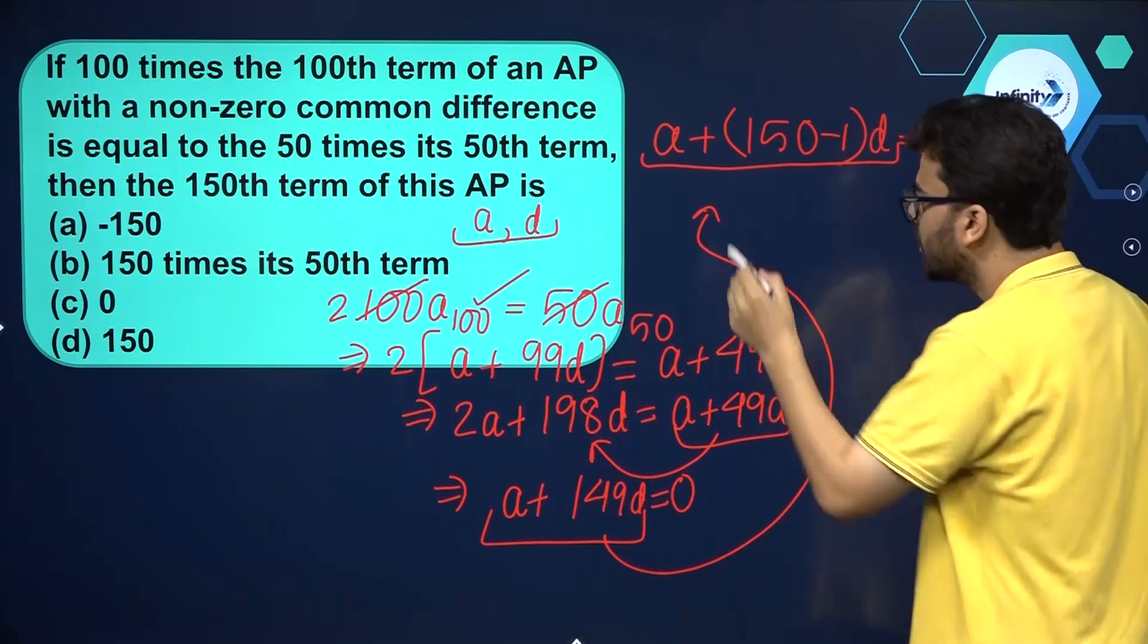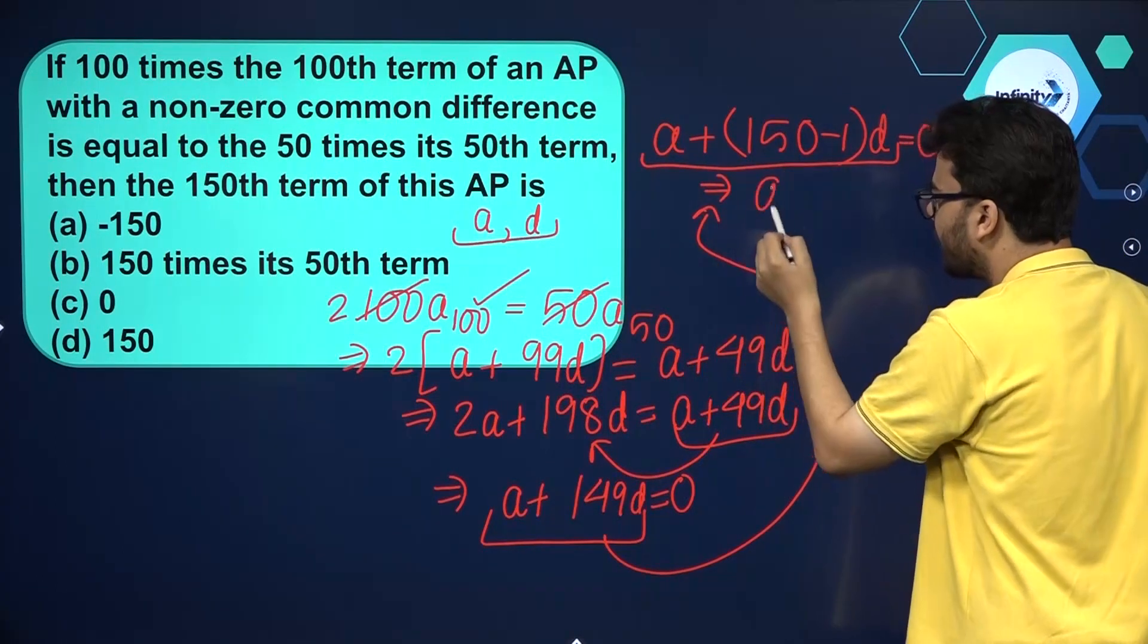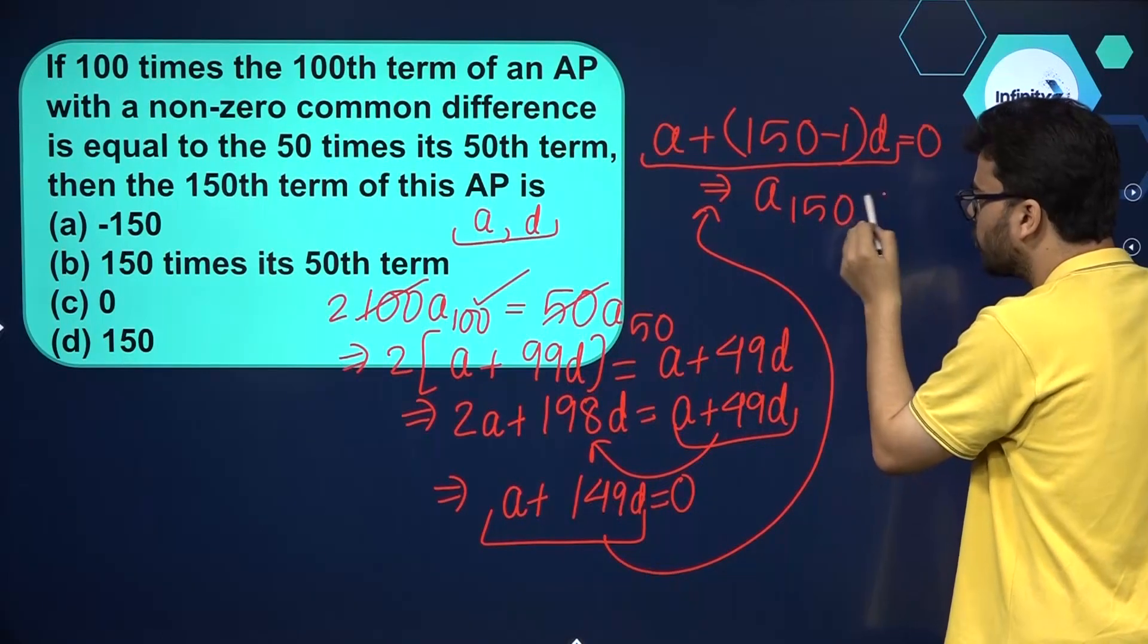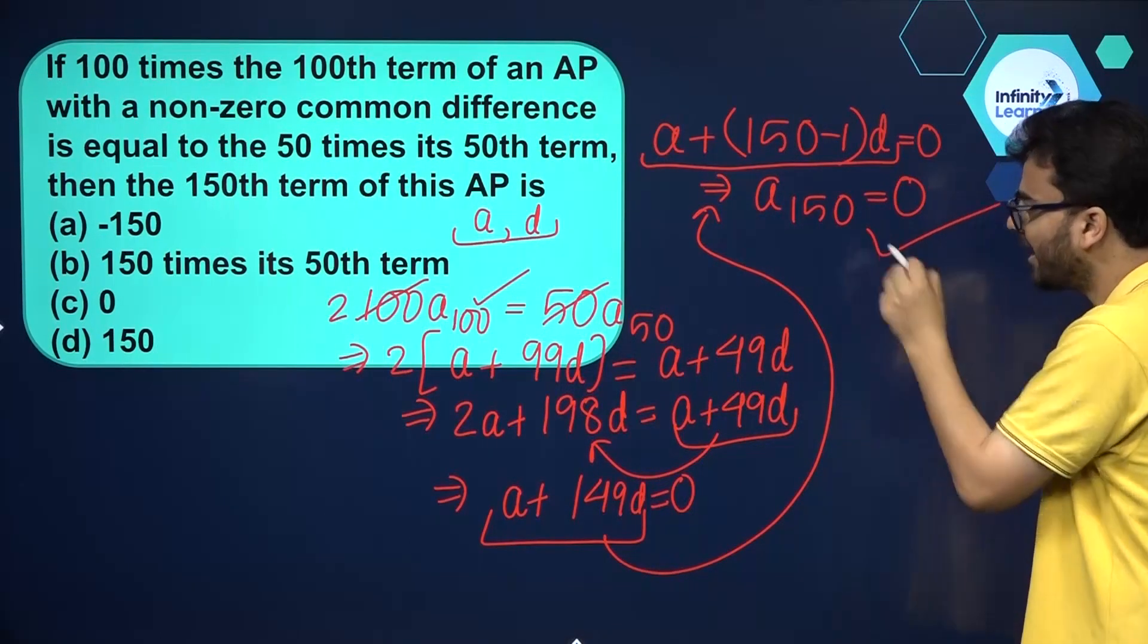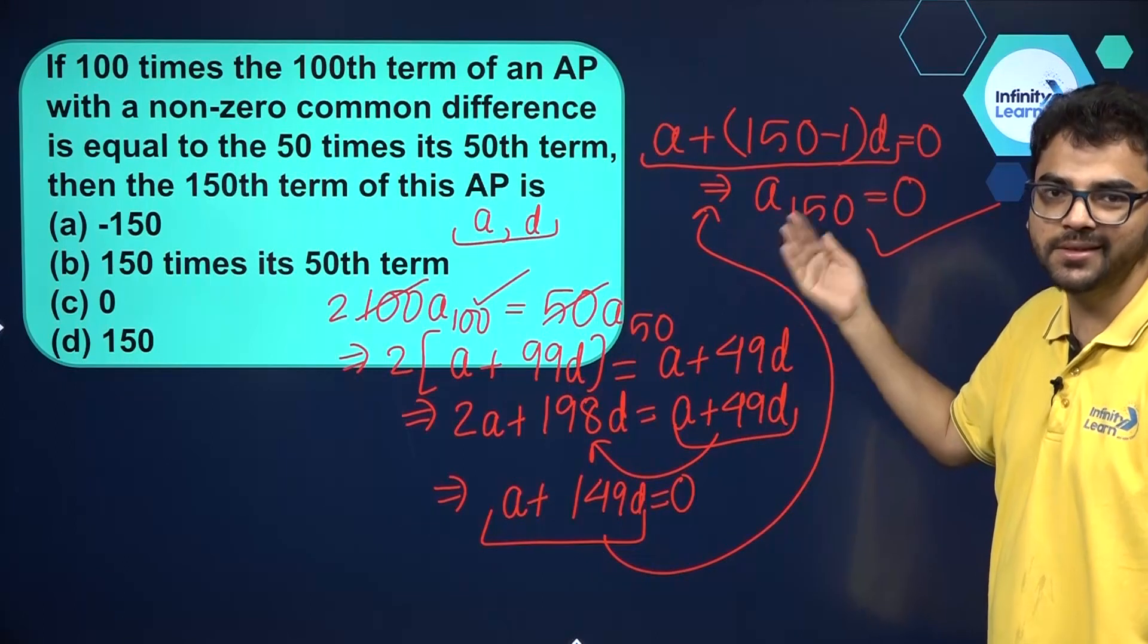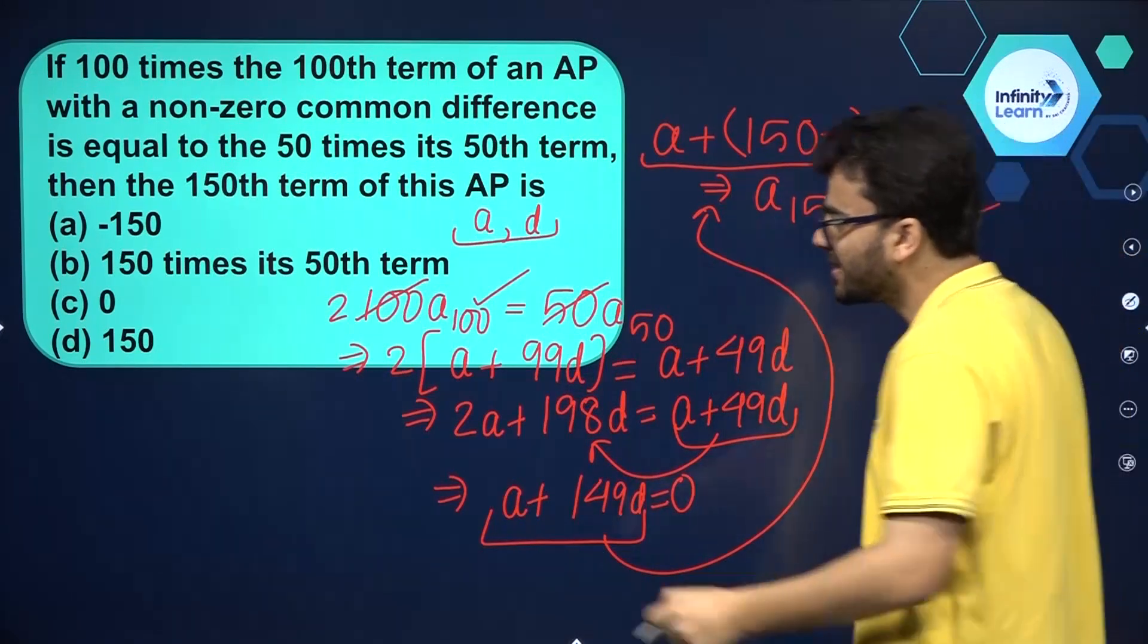So I can say that it is A150, and that equals 0. So the 150th term of this AP is 0.